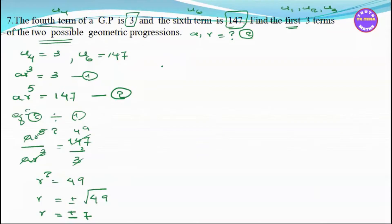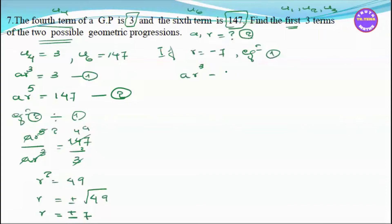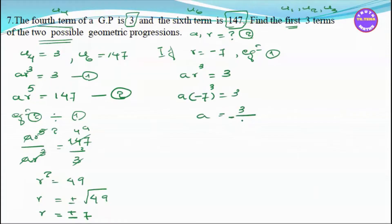There are two possible geometric progressions. For r = +7 and r = -7. Using equation 1 (a·r² = 3): when r = +7 or r = -7, a·r² = 3, so a = 3 by 49. When r = minus 7, a is also 3 by 49 since r² is the same.